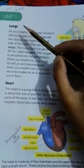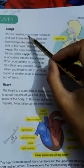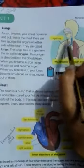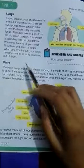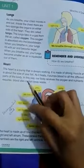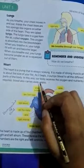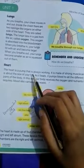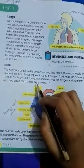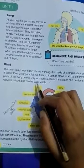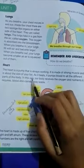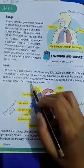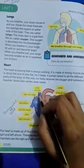When you breathe, your chest moves in and out. Inside the chest, there are two sponge-like lungs. The heart is another important organ — it is made up of strong muscles and is about the size of your fist. The main function of the heart is to pump blood all around the body. In this way, the body receives oxygen and nutrients which are necessary for all organs to carry out their activities.